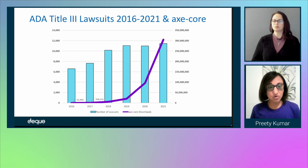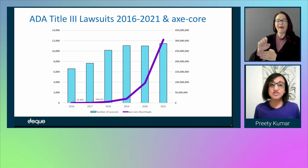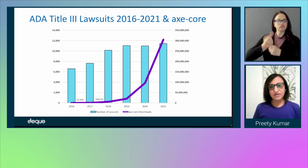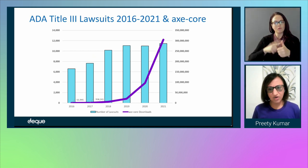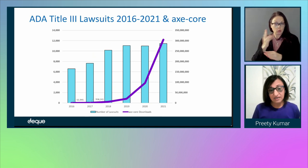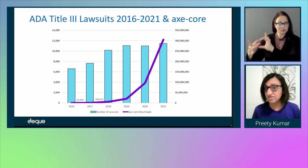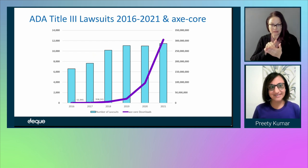The steep adoption of AxeCore is a testimonial of how, given the tools, all of us want to do the right thing. When we first launched AxeCore, we thought maybe we'd get developers to embrace it, maybe build a community. In 2017, we had 1 million downloads and thought that's very good — developers are embracing it.